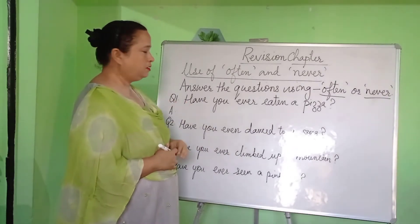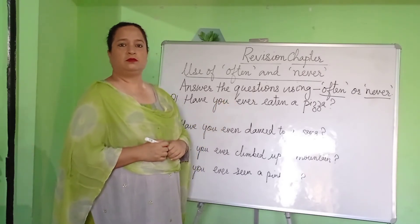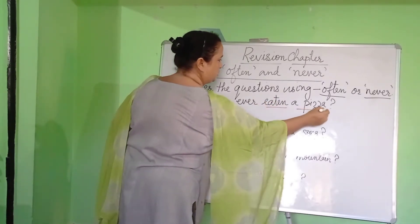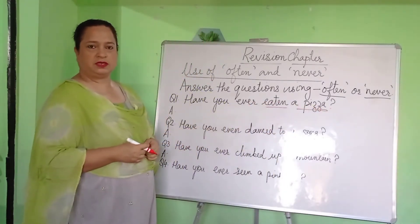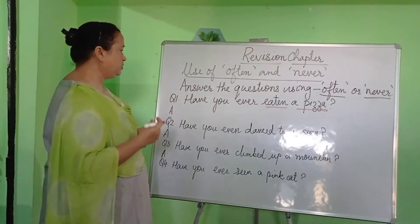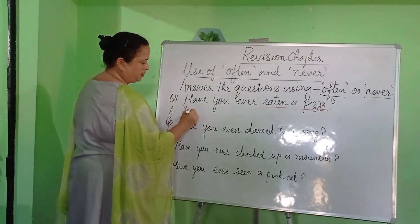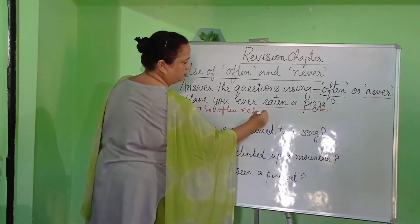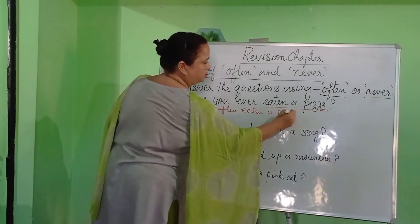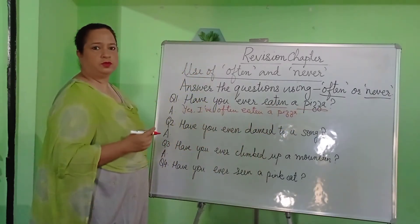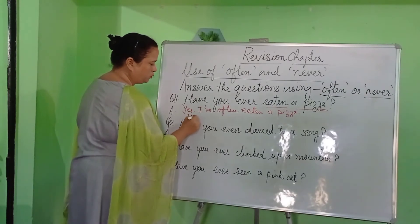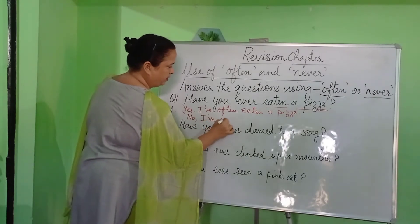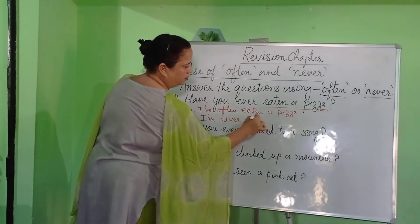Let us have a look at the first question. Have you ever eaten a pizza? The verb here is 'eaten' and we are talking about a pizza. Many children must have eaten a pizza. So if your answer is going to be in the positive form, you will write: Yes, I have often eaten a pizza. If you haven't eaten a pizza, you begin your answer using No. No, I have never eaten a pizza.